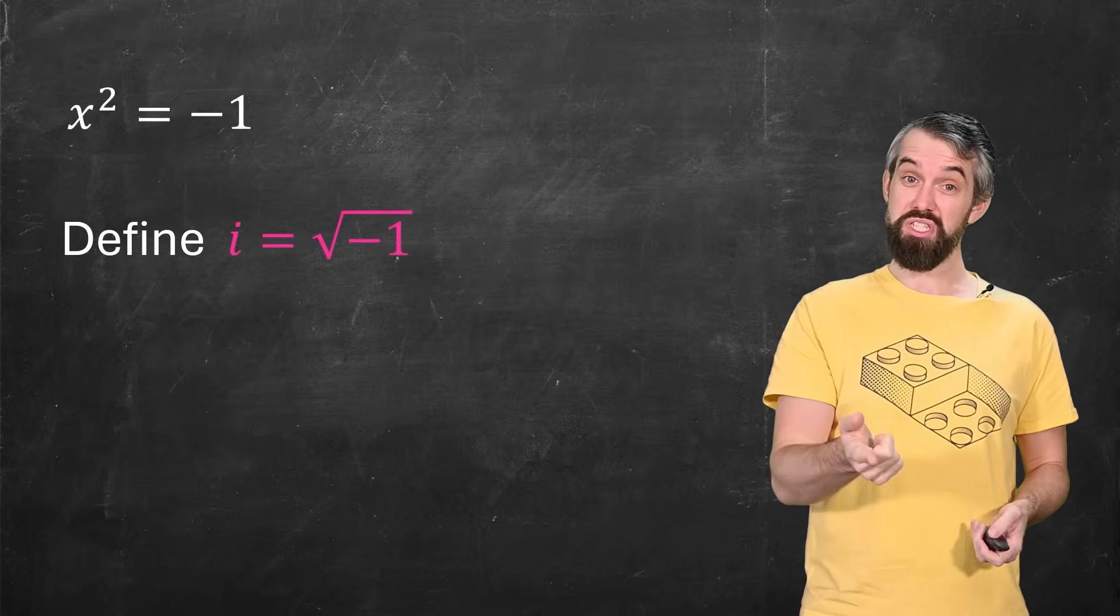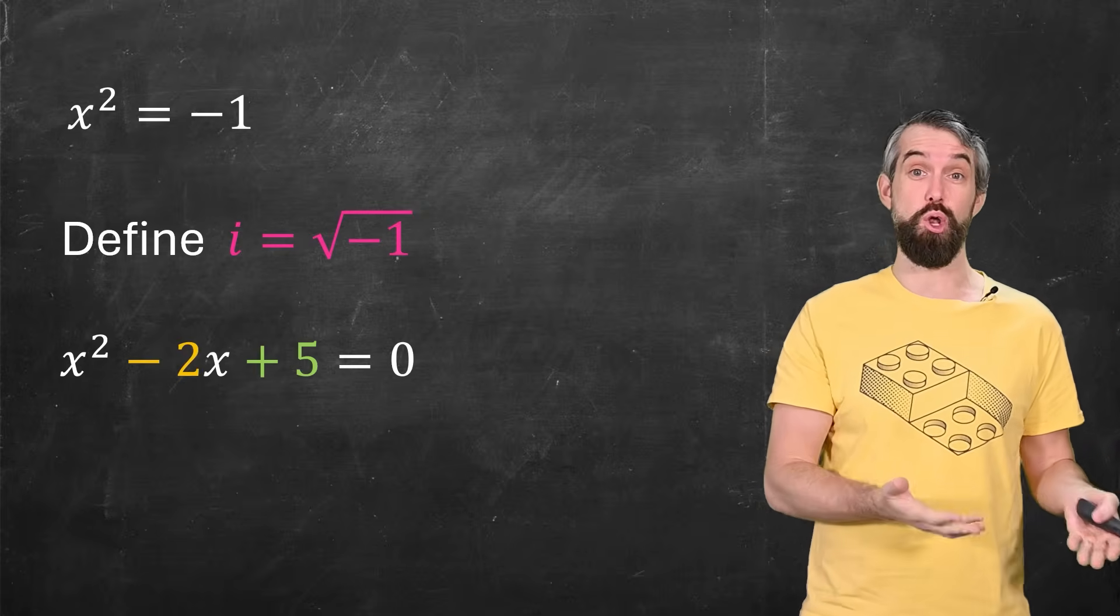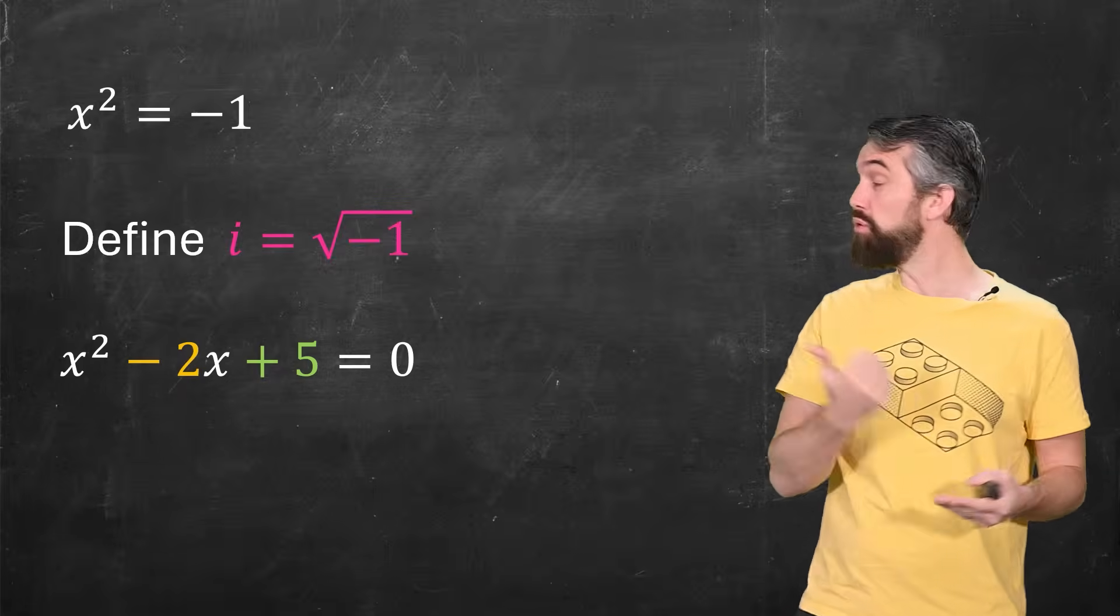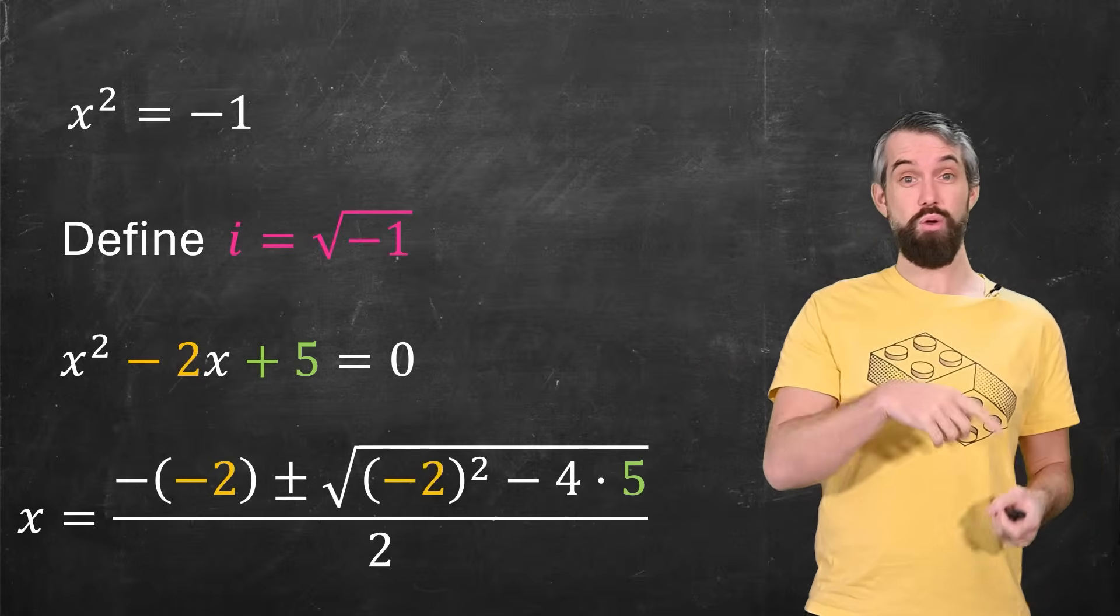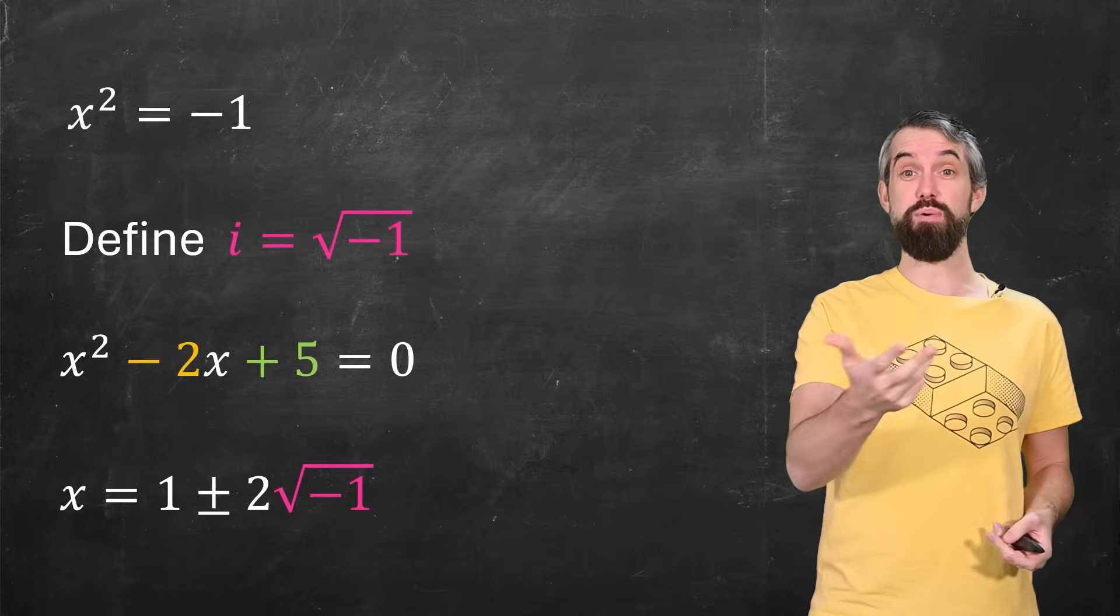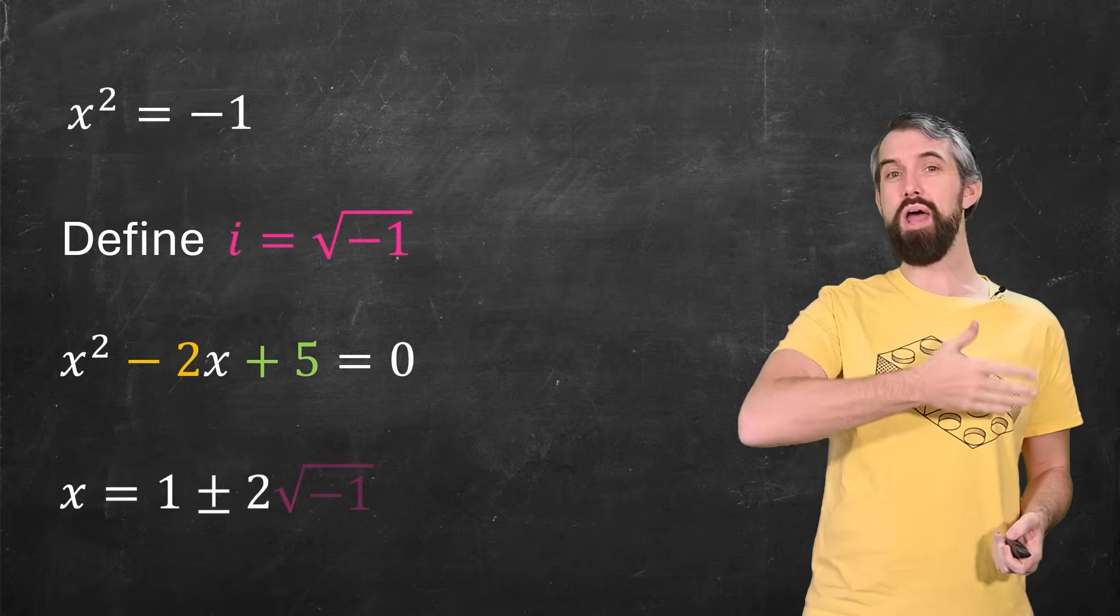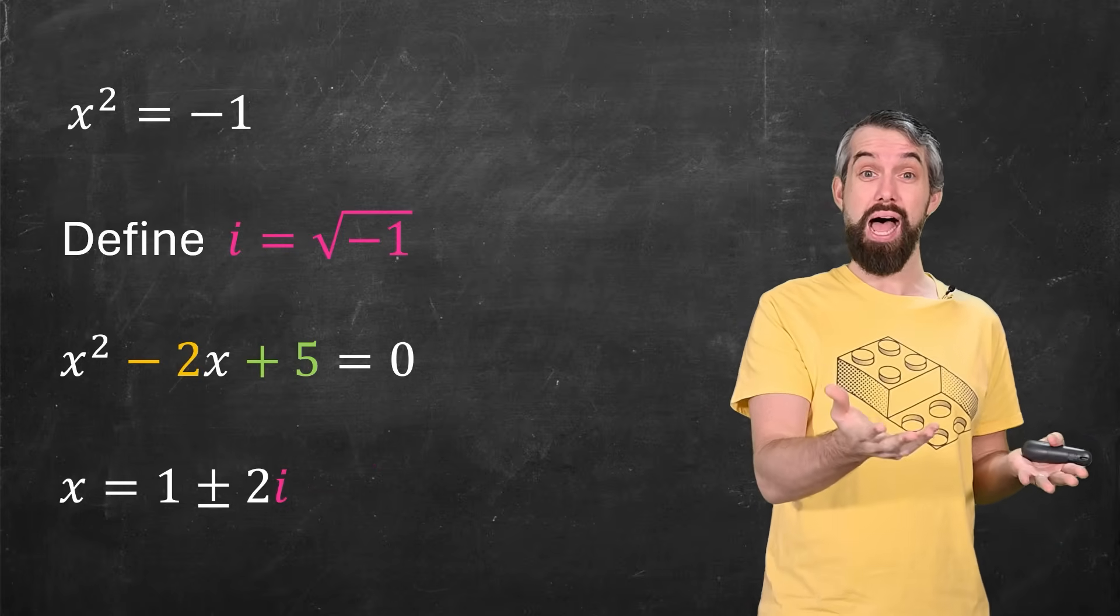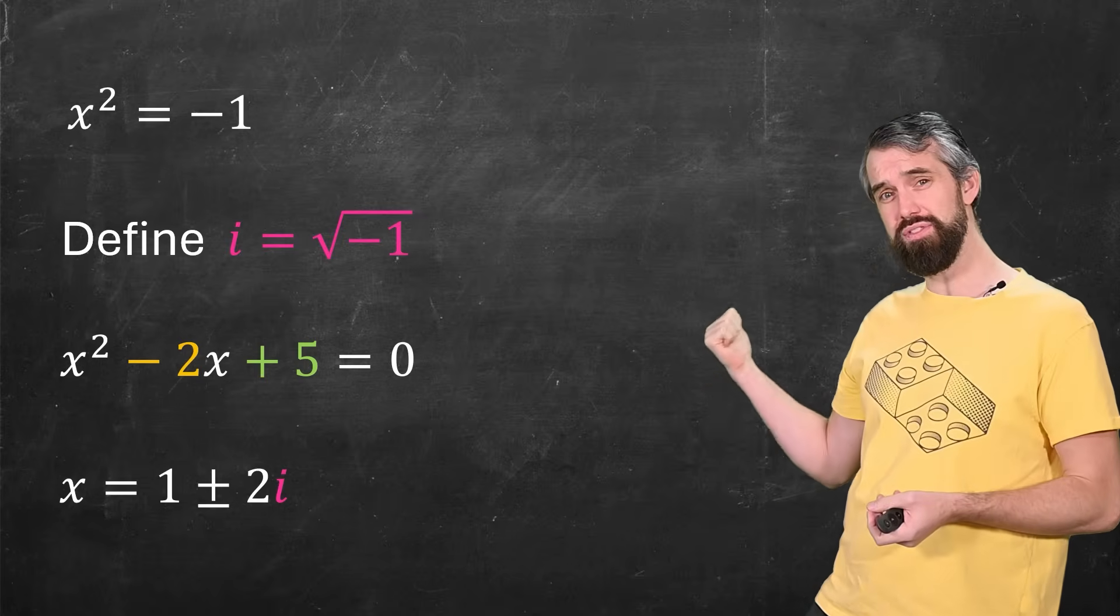What's really interesting is that if I take a different polynomial, like this quadratic, you're not going to be able to easily factor it, but you can use the quadratic formula, and the quadratic formula simplifies something with a square root of minus one in it, and so one plus or minus two i. In other words, the introduction of the imaginary number i has now also solved this quadratic.